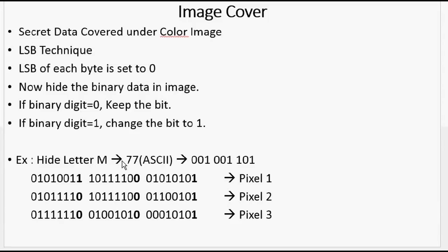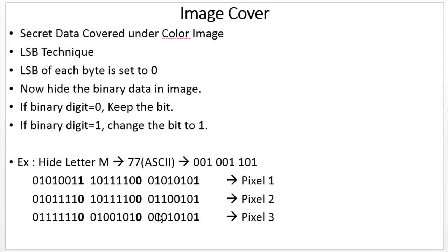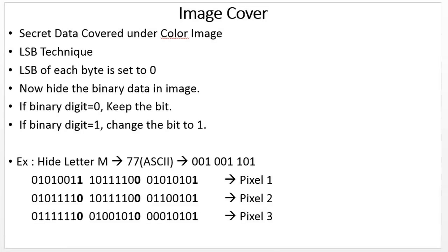Now let us consider an example: hiding the letter M, whose ASCII value is 77 and binary representation is 01001101 (that is, 001, 001, and 101). We choose the border pixels as pixel 1, 2, and 3, where each pixel is 24 bits. In each pixel, the least significant bit of each byte is replaced by the data we need to send — that is, the bits represented in bold: 001, 001, and 101, which are the data we need to send. Hence, we can say that steganography is more efficient than cryptography, wherein one cannot even tell whether the data is being sent or not.